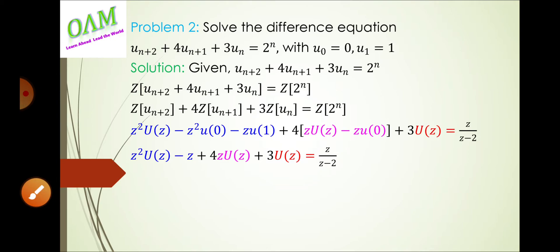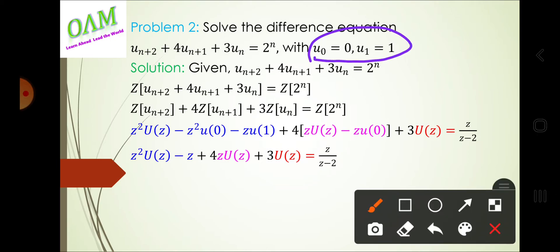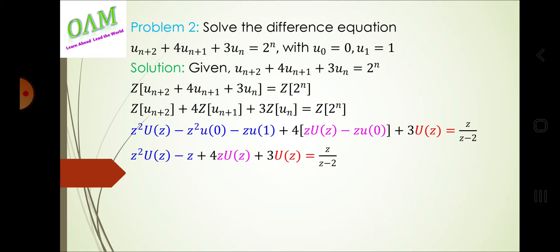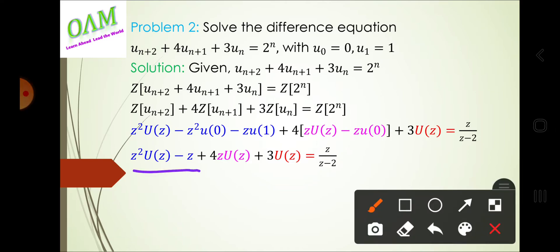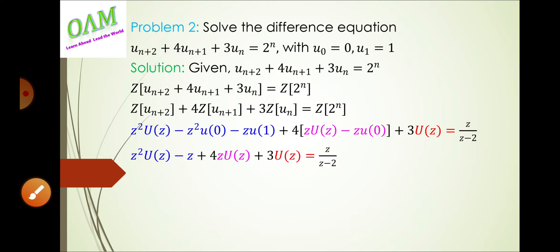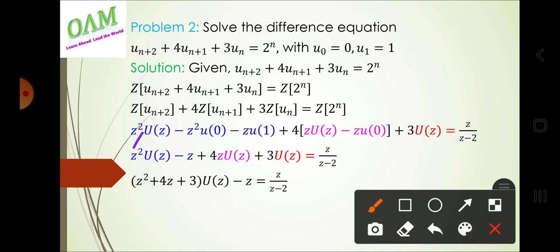These are the initial conditions: u(0) = 0 and u(1) = 1. Substituting these values, we get: z²·U(z) − z + 4z·U(z) + 3·U(z) = z/(z−2). Collecting the U(z) terms on the left-hand side and simplifying.